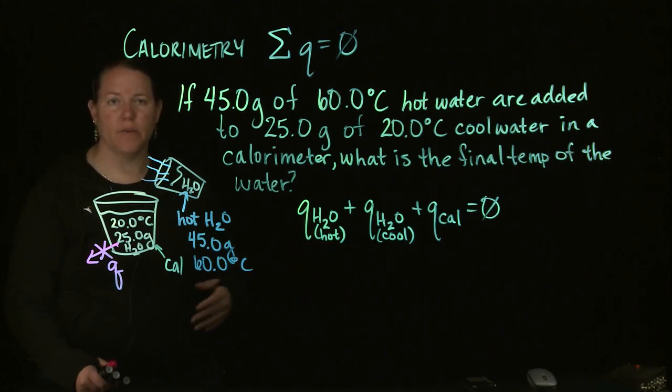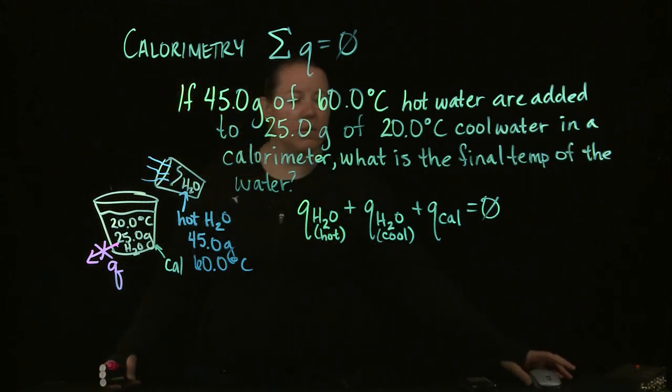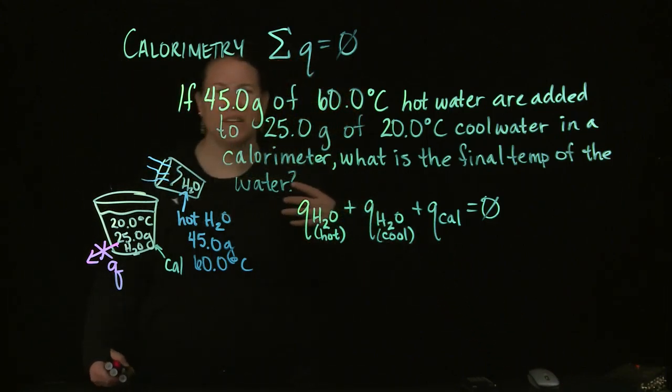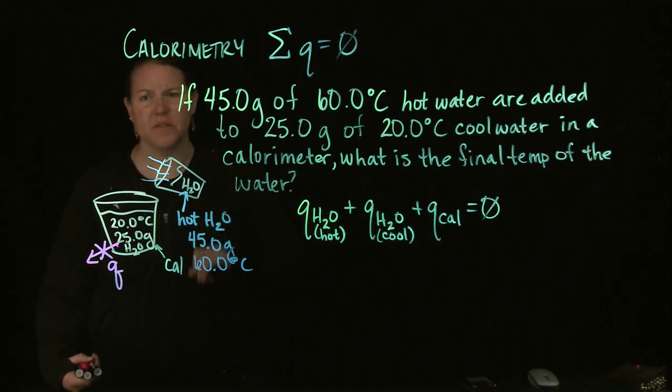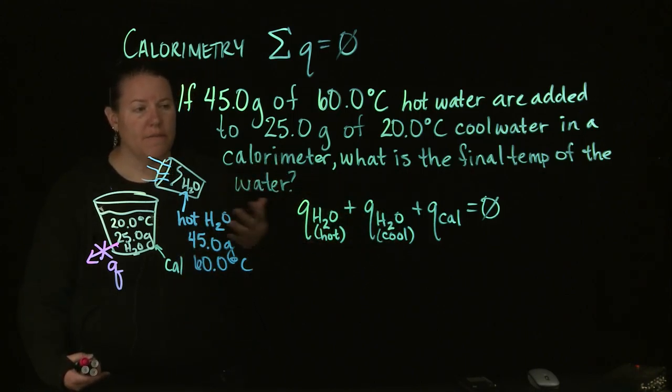Sometimes problems do that in calorimetry in order to save you time. They're meant to say that the heat absorbed by the cup is so ridiculously small compared to the other two that we don't even care about it.